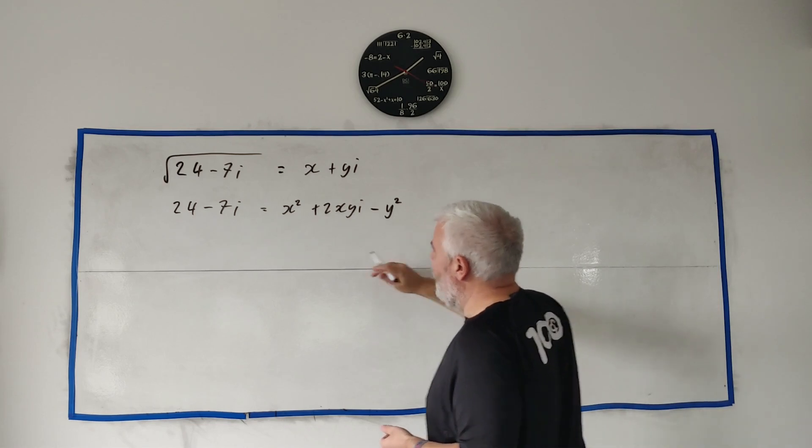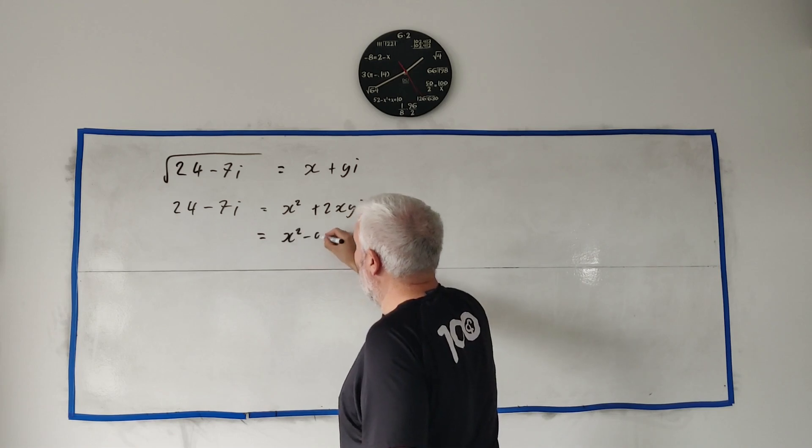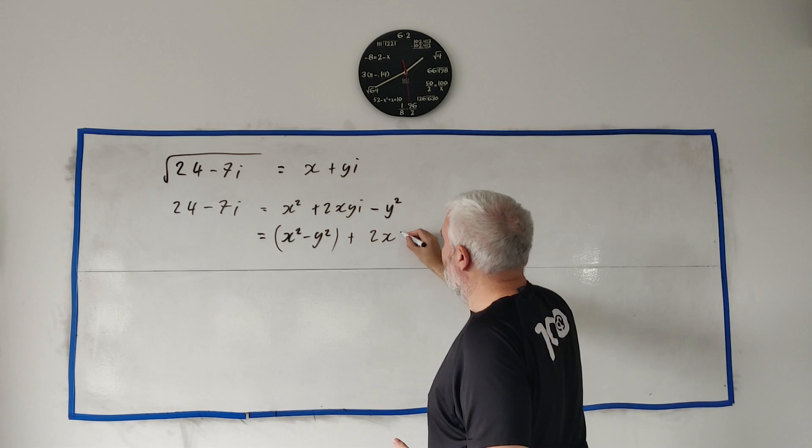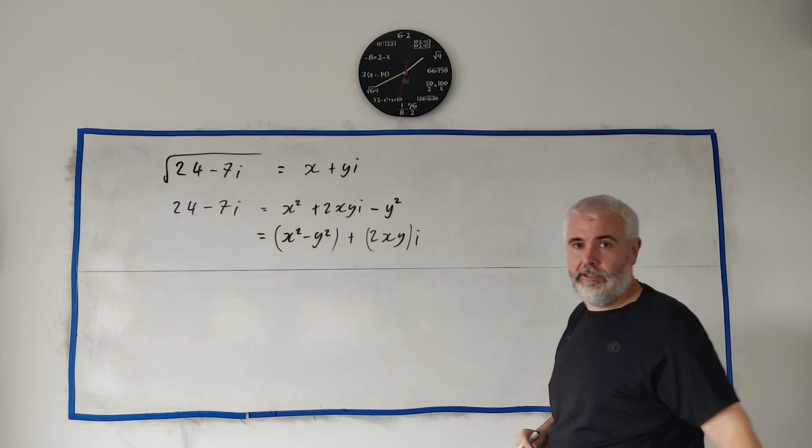i squared is just minus 1, so we get minus y squared. If we clean this up a little bit and put all the real parts together, we get x squared minus y squared plus 2xy times i. So that's the real part and that's the imaginary part.